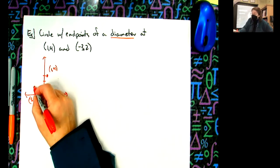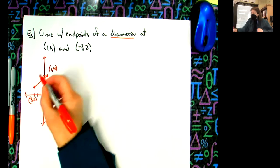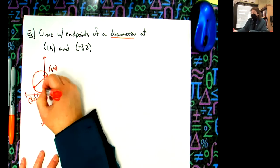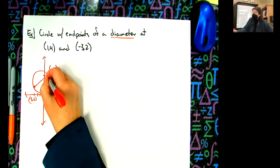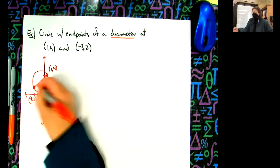So this is the diameter of the circle, which means then my circle goes through there, because this is an endpoint of the diameter and this is an endpoint of the diameter.